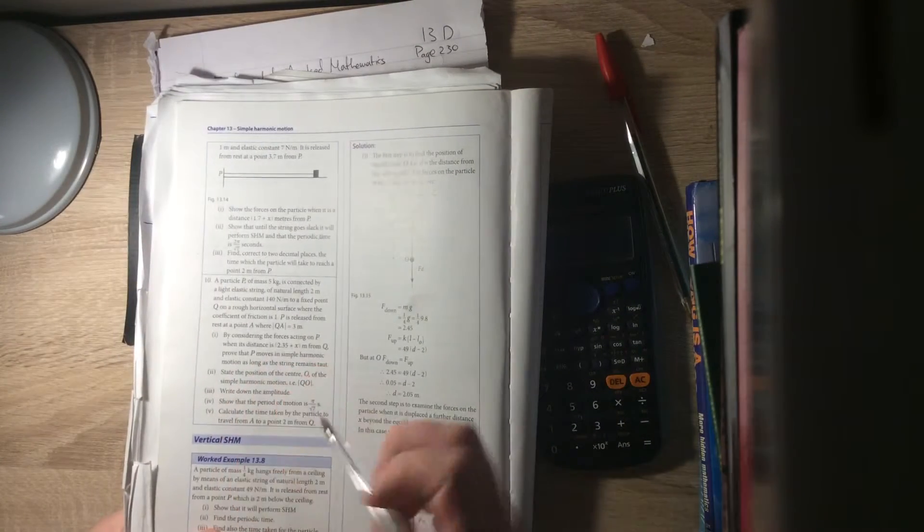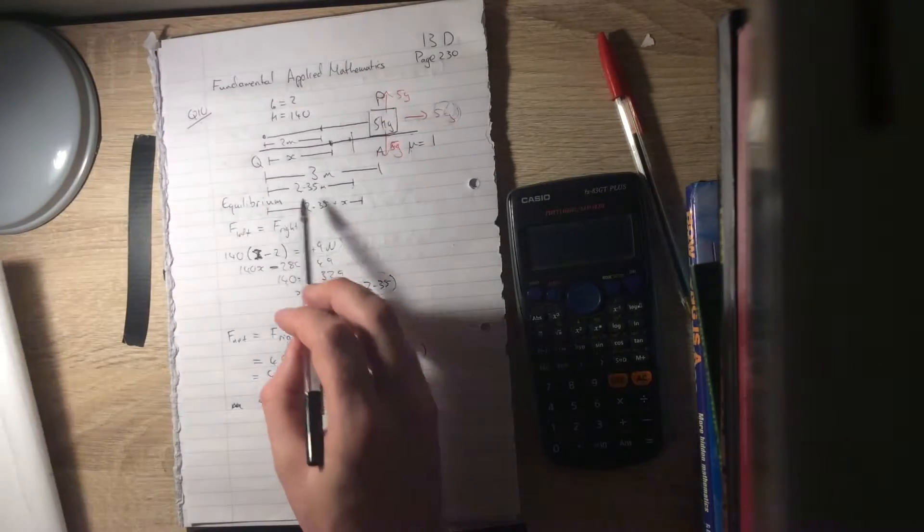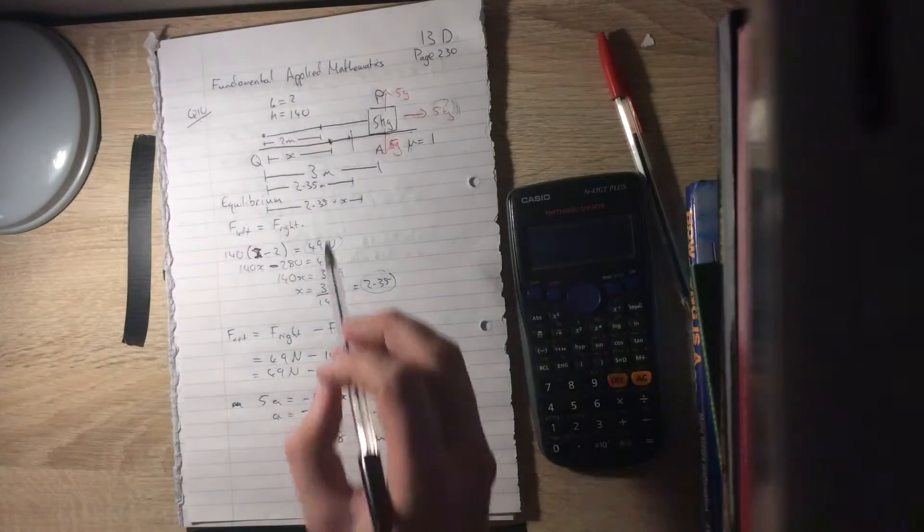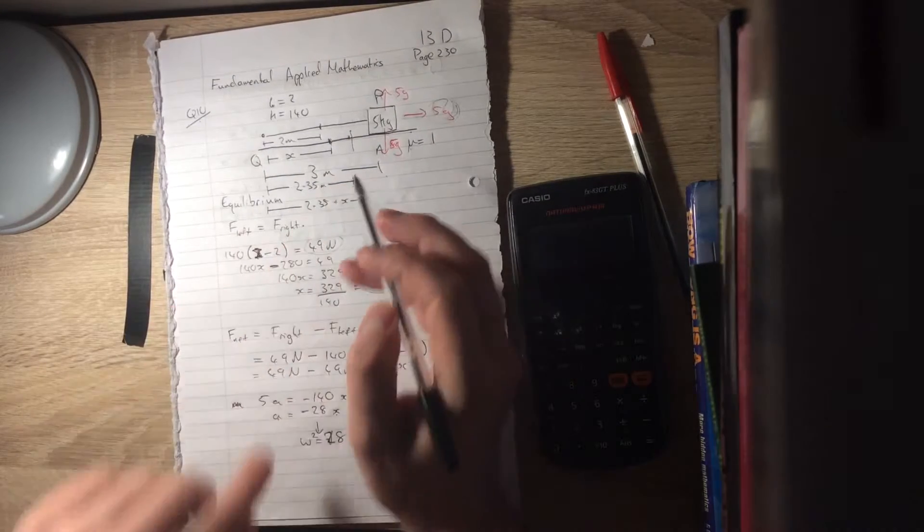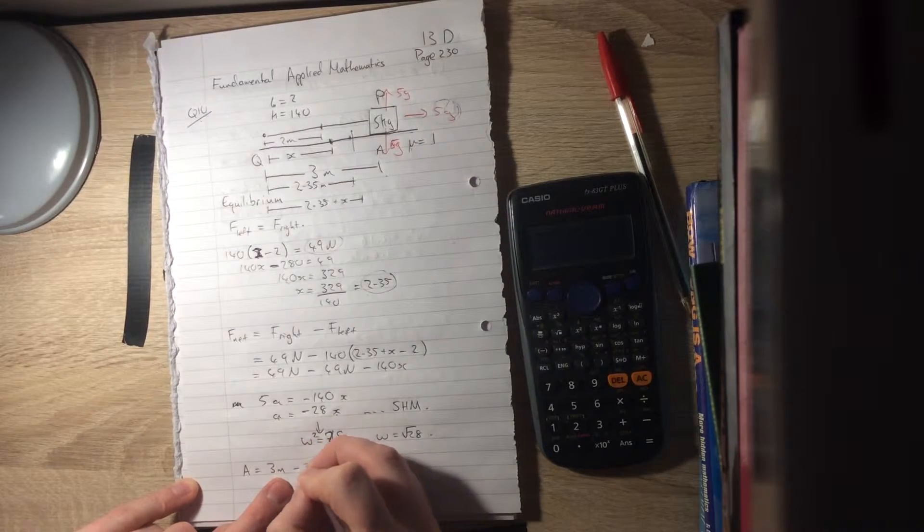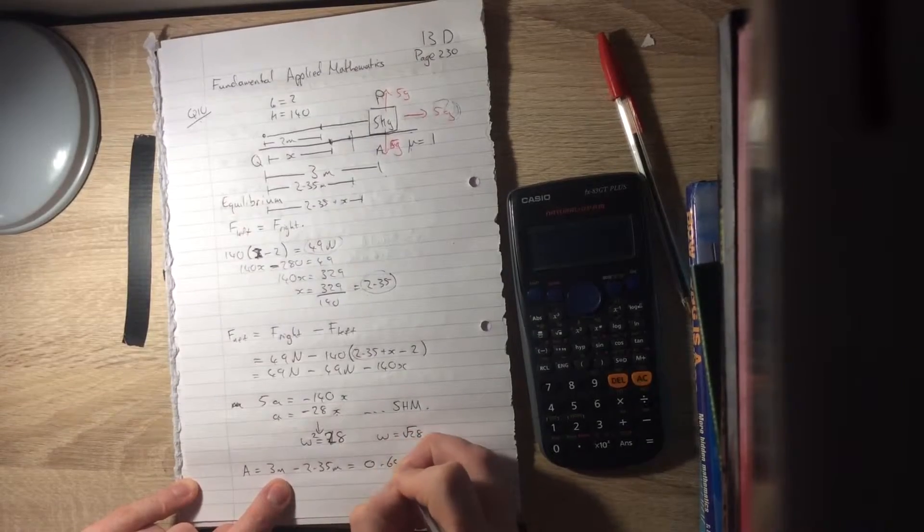Show the simple harmonic motion, done. State the position of the centre O of simple harmonic motion. Well, that's 2.35 metres from Q is our equilibrium point. Write down the amplitude. So how far beyond our equilibrium point have we started? Well that's just amplitude is going to be the 3 metres we started minus the 2.35 is our equilibrium point. So that's 0.65 metres.